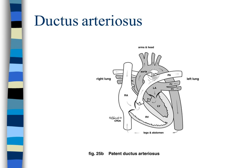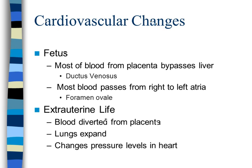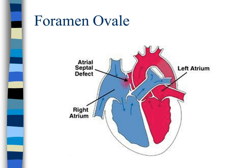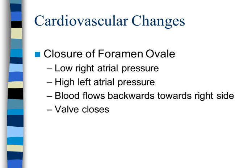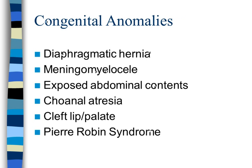Air displaces fluid as the pulmonary arterioles and capillaries open, decreasing vascular resistance. Blood is diverted from the ductus arteriosus, which eventually closes, leading to persistent fetal circulation if abnormal. Most blood from the placenta bypasses the liver via the ductus venosus, and blood passes from the right to left atria through the foramen ovale. In extra-uterine life, the foramen ovale closes as pressures change, and the ductus venosus contracts forcing blood through the liver sinuses.